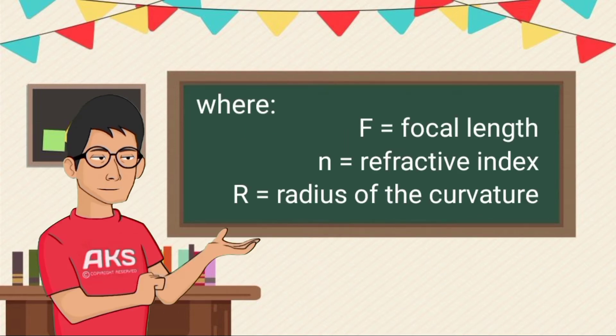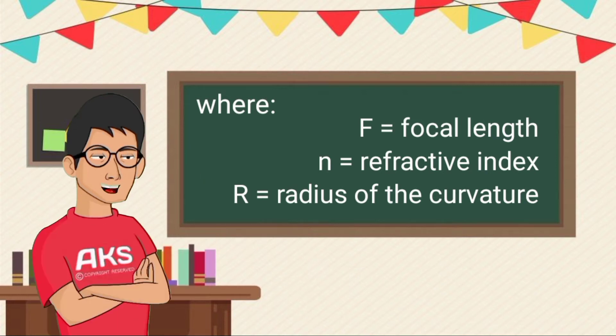Where f is the focal length, n is refractive index, and r is radius of the curvature.